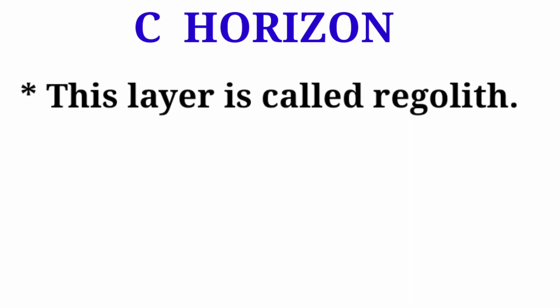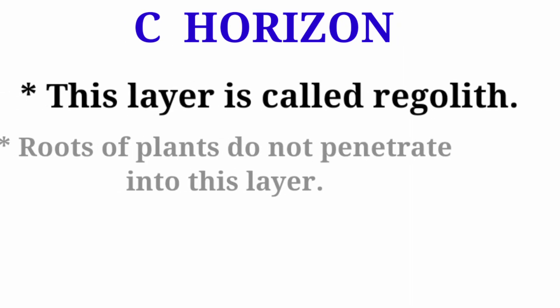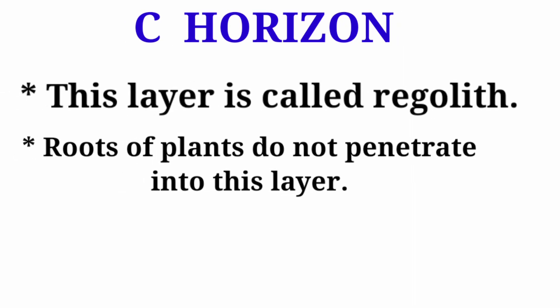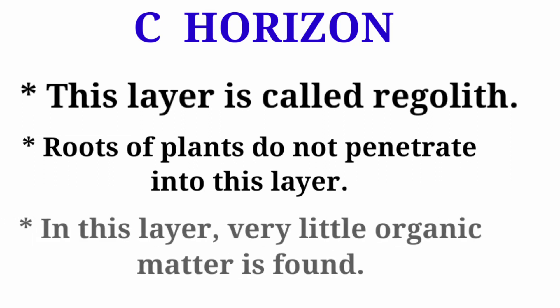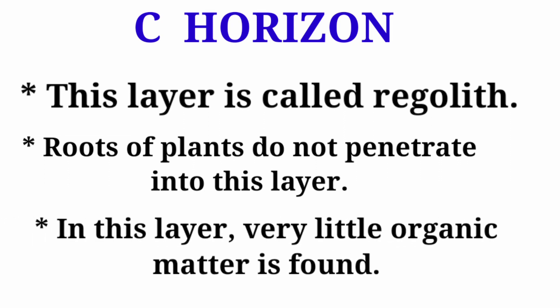C-Horizon: This layer is called regolith. Roots of plants do not penetrate into this layer. In this layer, very little organic matter is found.